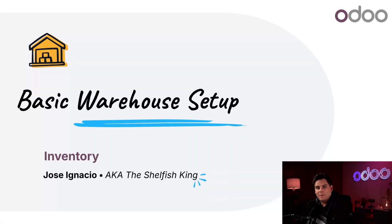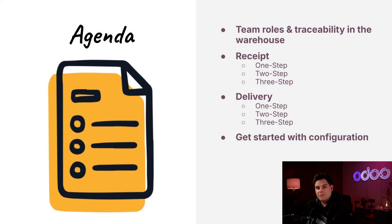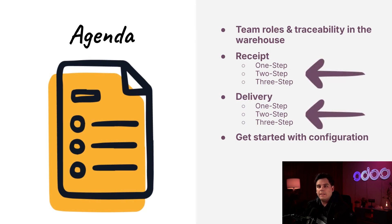Hello Doers, today we're focusing on a key concept in Odoo's inventory application: configuring inbound and outbound flows. Warehouse managers must balance speed, traceability, and cost when setting up inventory flows. Do you need a simple fast setup, or do you need additional checkpoints for accountability and compliance? We can configure receipts and deliveries in one, two, or three steps, and today I'm going to help you determine the best fit for your business.